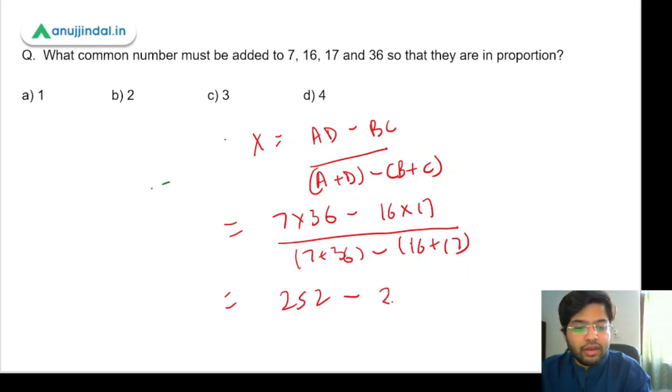And 16 into 17 gives us 272. 36 plus 7 gives us 43 and 16 plus 17 gives us 33. So basically what we get is minus 20 upon 10, which is nothing but minus 2.